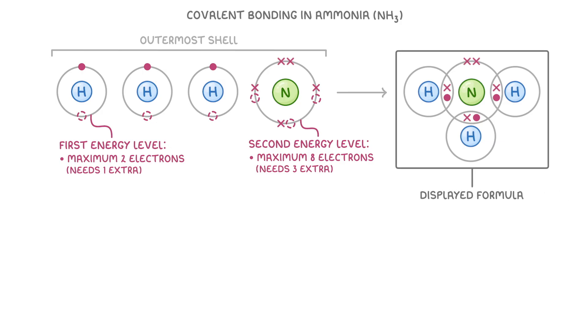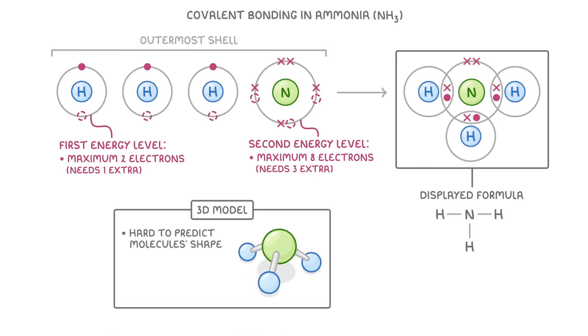Or if we wanted the displayed formula instead, we would just rub out all of the shells and electrons and instead place lines wherever electrons were being shared, which just means placing a line wherever there was a covalent bond. Now when it comes to the 3D model things get a bit trickier because it's hard to predict what shape the molecule will make. Luckily though, you don't have to know this just yet, you just need to be able to recognize them.